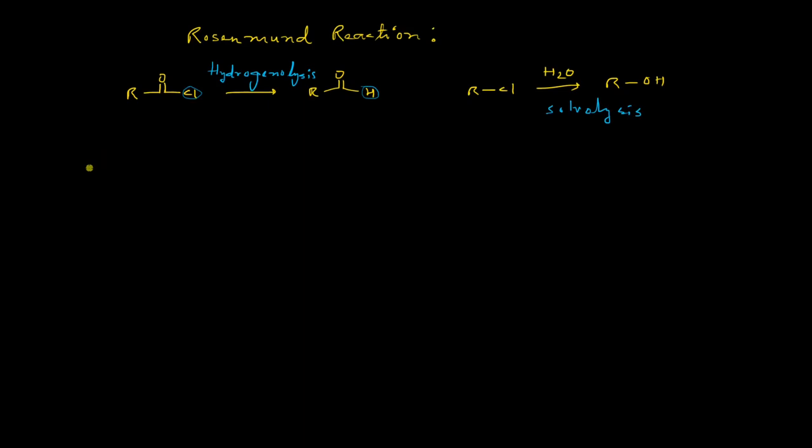Now we have to consider what are the catalysts for this reaction. Based on this particular group, which is R, catalysts are different. For example, if R is aliphatic, the catalyst will be different than when R is aromatic.